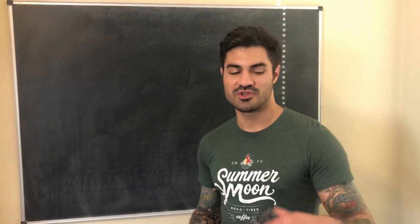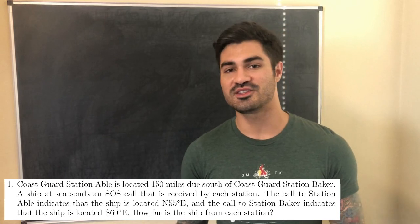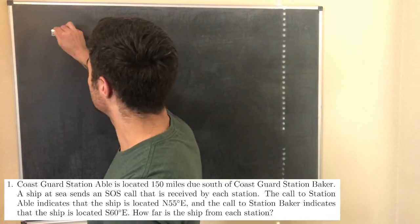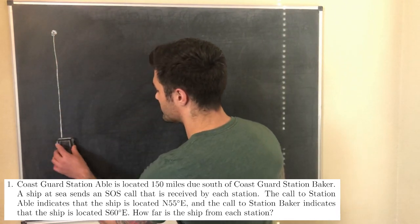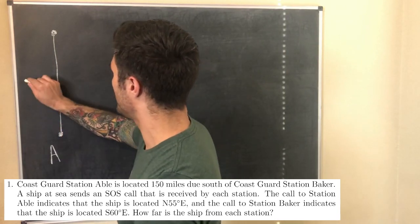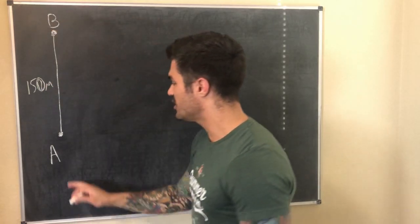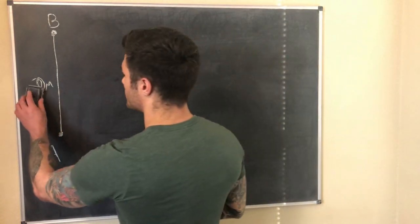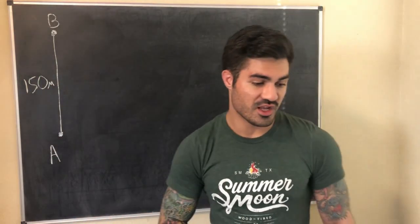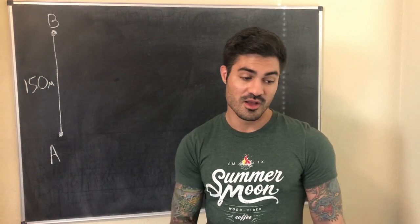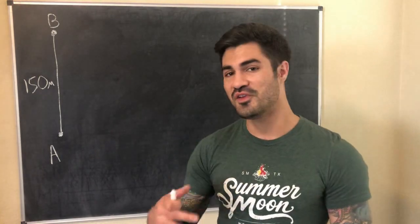I'll have timestamps in the description to each problem. Let's jump into the first problem. Coast Guard Station Abel is located 150 miles due south of Coast Guard Station Baker — due south just means directly south. So Abel is 150 miles due south of Baker; we'll call Station Abel A and Station Baker B. A ship at sea sends an SOS call that is received by each station. The call to Station Abel indicates that the ship is located north 55 degrees east.